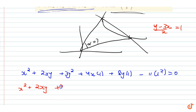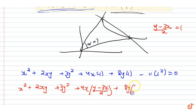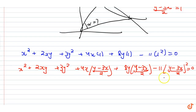2xy + 3y² + 4x·[(y − 3x)/2] + 8y·[(y − 3x)/2] − 11·[(y − 3x)/2]² = 0. Right? So: x² + 2xy...